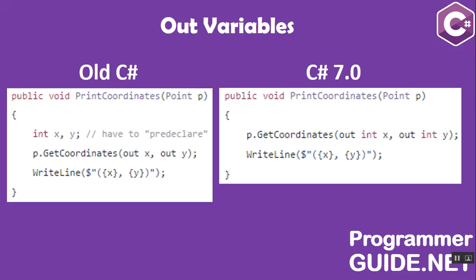Out variables. In older versions of C#, using out parameters is not as fluid as we would like. Before you can call a method with out parameters, you first have to declare variables to pass to it. Since you typically are not initializing these variables, you also cannot use var to declare them but need to specify the full type.